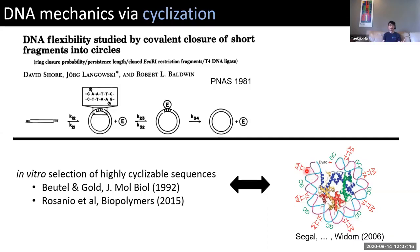They find 10-base periodic occurrences of AA/TT dinucleotides, and these features are also found in native genomic sequences known to position nucleosomes at well-positioned locations. So there is already a well-appreciated connection between DNA mechanics and where nucleosomes position — in terms of angular positioning, though not so much translational positioning yet.